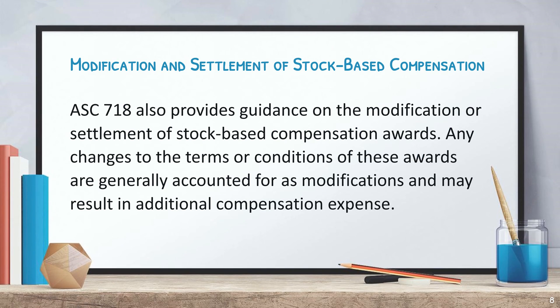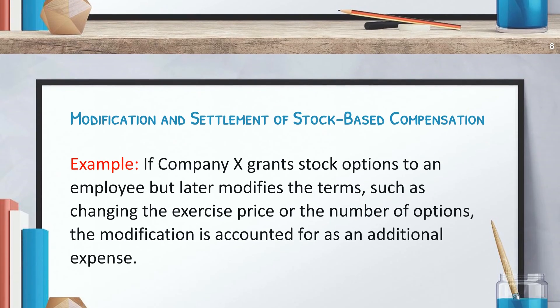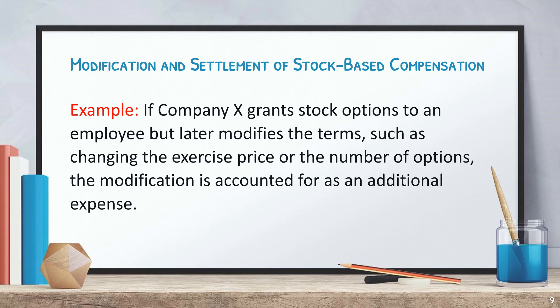ASC 718 also provides guidance on the modification or settlement of stock-based compensation awards. Any changes to the terms or conditions of these awards are generally accounted for as modifications and may result in additional compensation expense. For example, if Company X grants stock options to an employee but later modifies the terms — such as changing the exercise price or the number of options — the modification is accounted for as an additional expense.